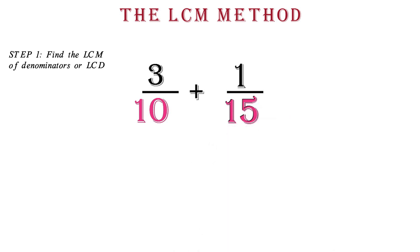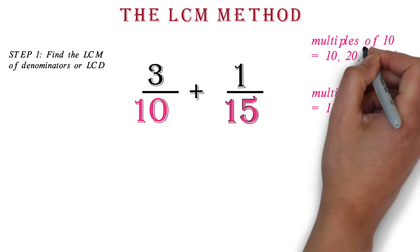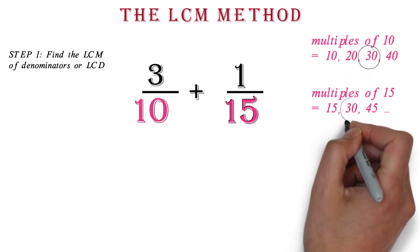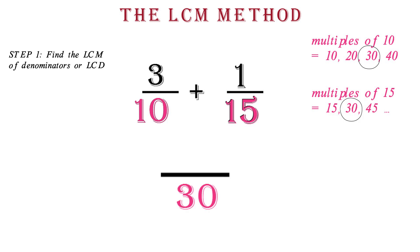You can use any of the methods we used in our video on multiples. The multiples of 10 are 10, 20, 30, 40, and so on. The multiples of 15 are 15, 30, 45, and so on. You will notice that the least common multiple is 30, which will also be the least common denominator.